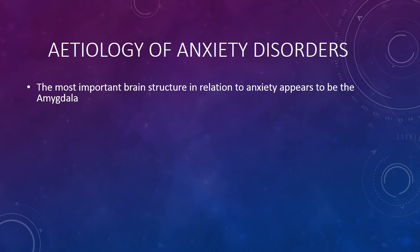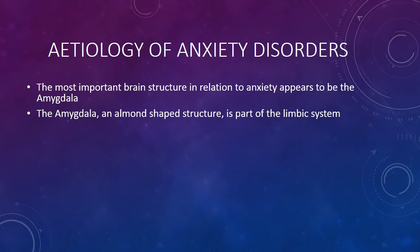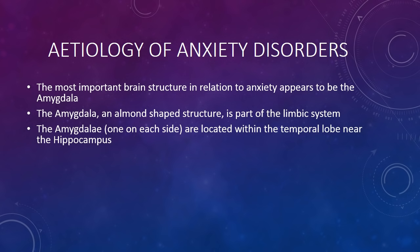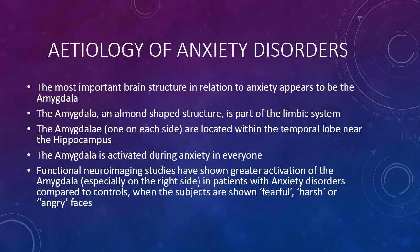The most important brain structure in relation to anxiety appears to be the amygdala, an almond-shaped structure that is part of the limbic system. The amygdala, one on each side, are located within the temporal lobe near the hippocampus. The amygdala is activated during anxiety in everyone. Functional neuroimaging studies have shown greater activation of the amygdala, especially on the right side, in patients with anxiety disorders compared to controls when subjects are shown faces with fearful, harsh, angry, or neutral expressions.